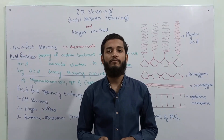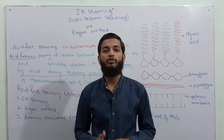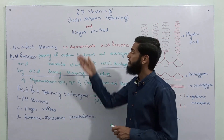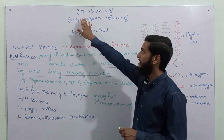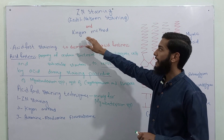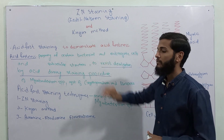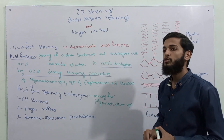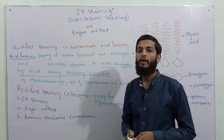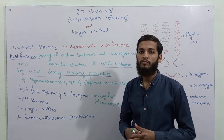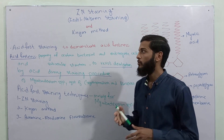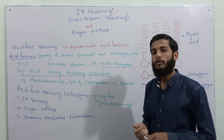Assalamu alaikum, I am Ramahan Khalid. Today we will talk about Ziehl-Neelsen staining method, which is also known as the Zedden method and Kinyoun method. Both of these methods are performed mostly for Mycobacterium species, that is for Mycobacterium tuberculosis.